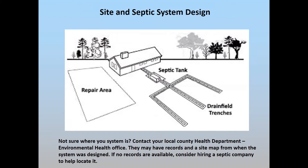If they don't have that on record, then you could hire a septic service provider to come out and actually locate your system components, both the tank and your drain field. Another important consideration is that a drain field has a life expectancy of approximately 30 years. Over time the drain field soil gets clogged with organics and no longer functions. You can't repair it — you actually have to go to another area within your property to build a new drain field.